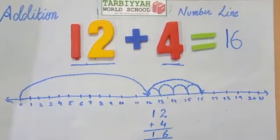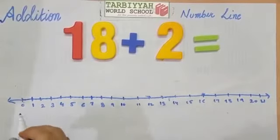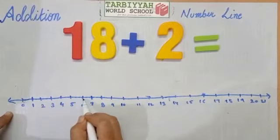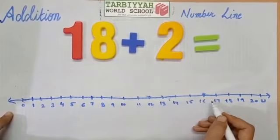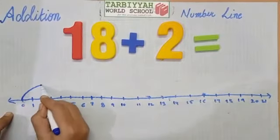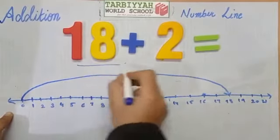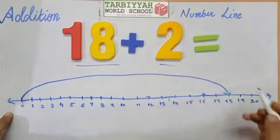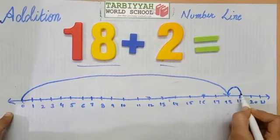See another example: 18 plus 2. We mark the number line from 0 to 18: 1, 2, 3, 4, 5, 6, 7, 8, 9, 10, 11, 12, 13, 14, 15, 16, 17, 18. We have to start from 0 to 18. Then how many digits do we have to add? 2. So we have to move forward 2 digit numbers: 1, 2. So, 18, 19, 20.